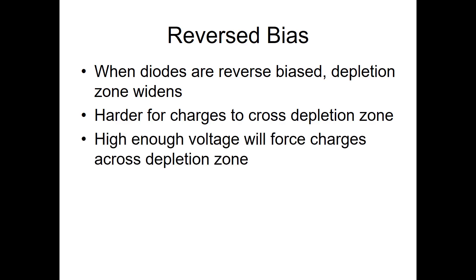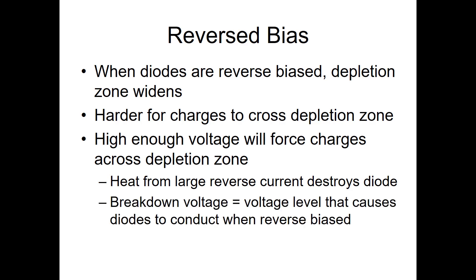The voltage would have to be much higher to push them across that zone. But if you get a high enough voltage, it will force the charges to move across that depletion zone. But heat from that large reverse current would destroy the diode. We call that the breakdown voltage, the voltage level that causes the diode to conduct when it's reversed biased.